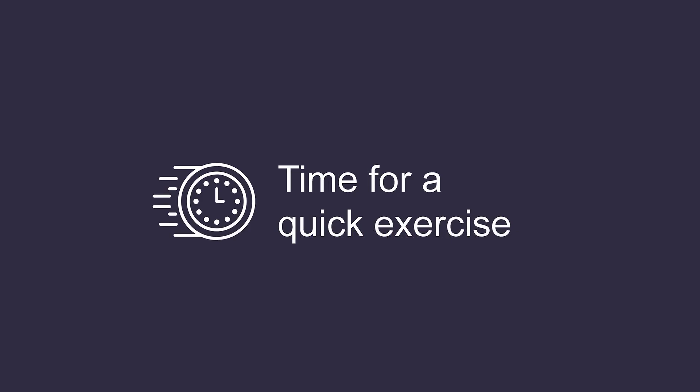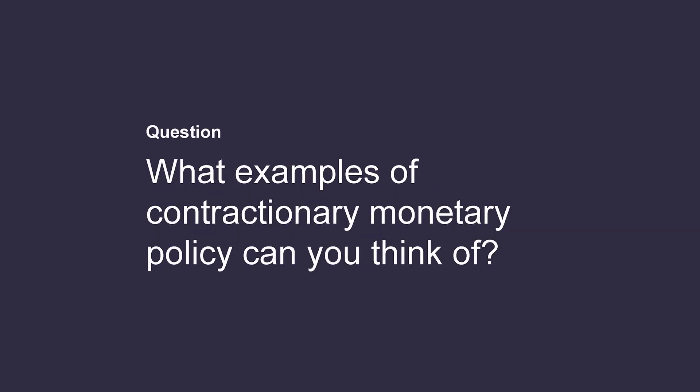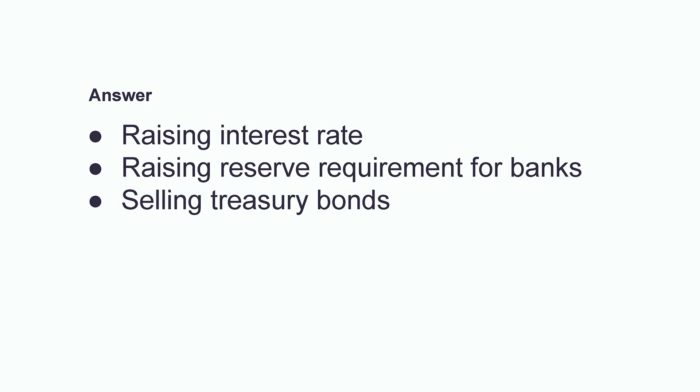Let's do the same exercise for monetary policy. What examples of contractionary monetary policy can you think of? If you answered raising the interest rate, raising reserve requirements for banks, or selling treasury bonds, you are correct. A higher interest rate discourages investment and consumption. Higher reserve requirements for banks means they are more restricted with lending and circulating money. And finally, when the central bank sells treasury bonds, it receives money that is withdrawn from circulation.